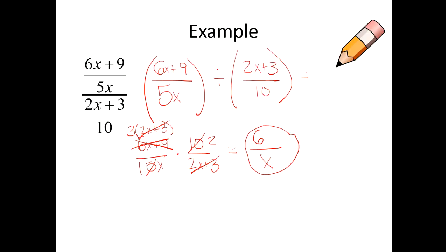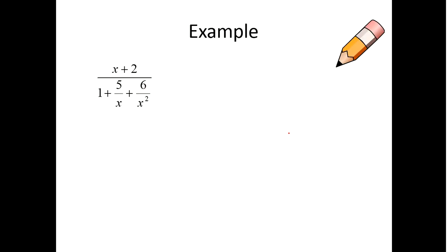Now this is a much simpler complex fraction, because we do not need to do anything to make it simpler. Let's look at our next one. Notice, this one's a complex fraction because we have fractions inside of fractions, and that's just gross. So first of all, let's rewrite our problem. So we got x plus two divided by one plus five over x plus six over x squared.